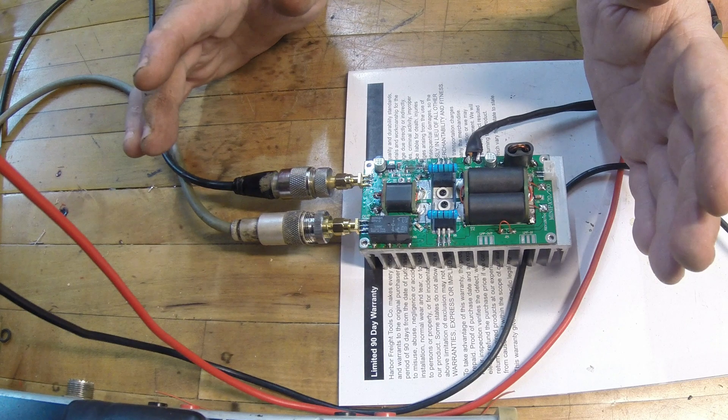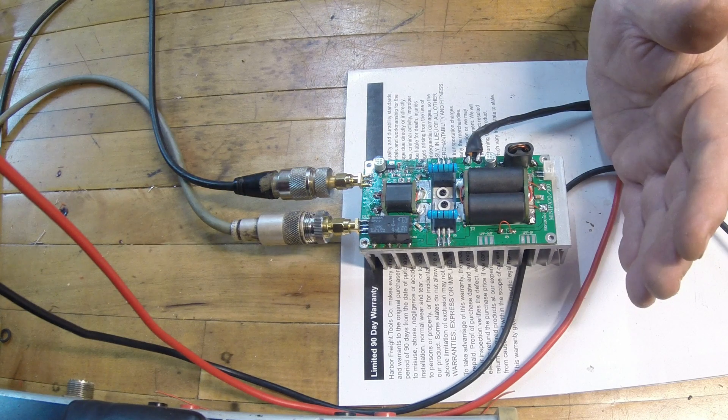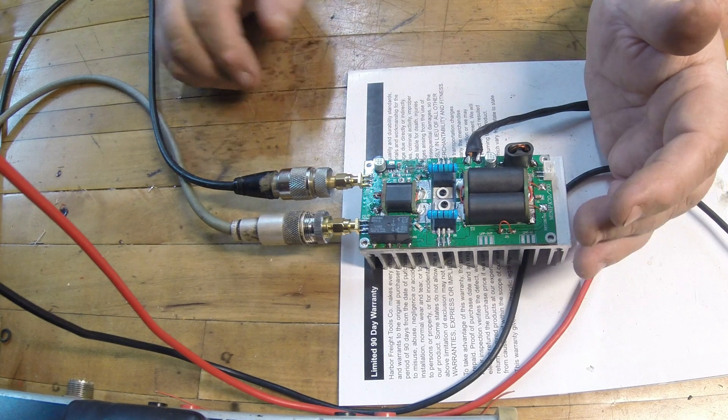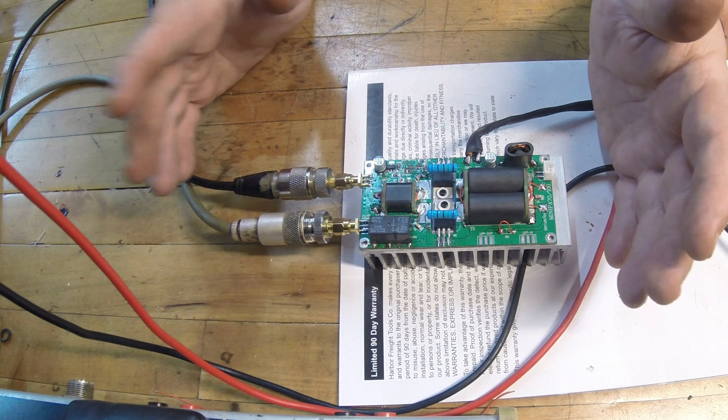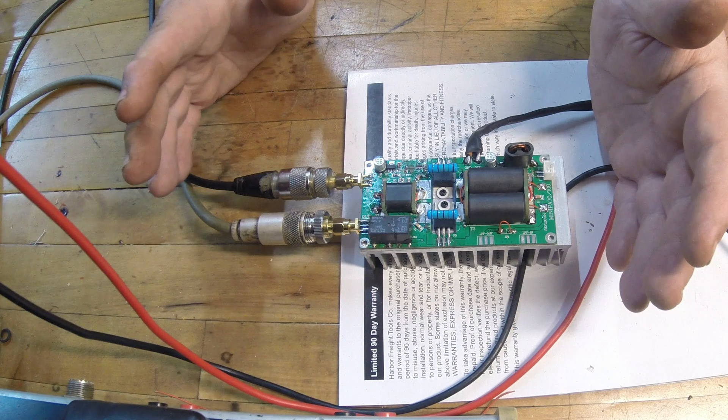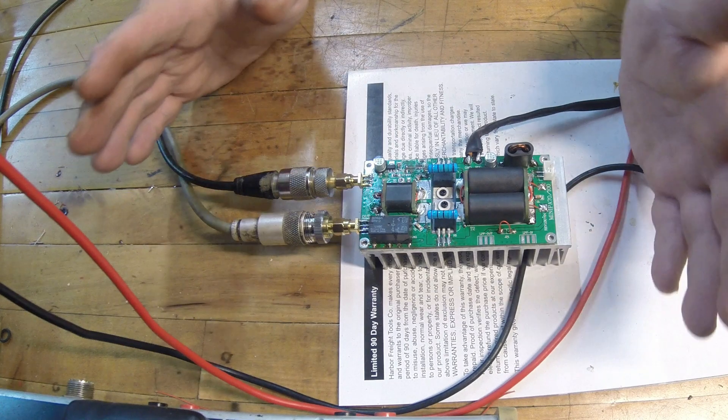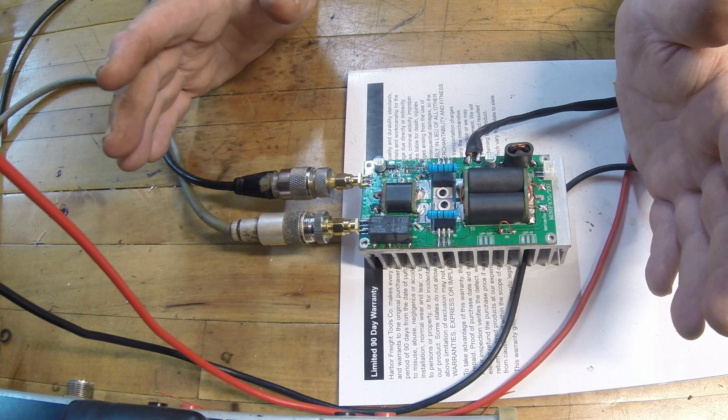So whenever you put the jumper in it fires the relay. So it's kind of like right now, technically with me jumped right there, it's in transmit mode right now. It's not - it's idle because I have no current going through it, but it's sitting here idling. That's why it's idling a little under one amp, is because it's active all the time.